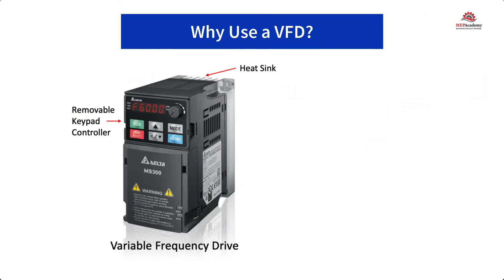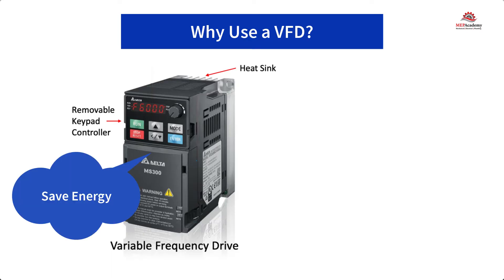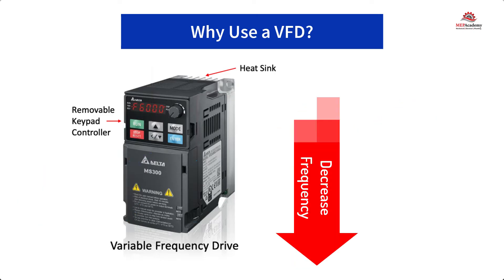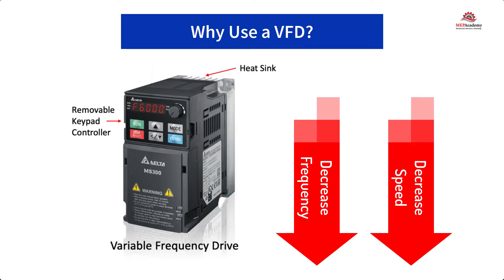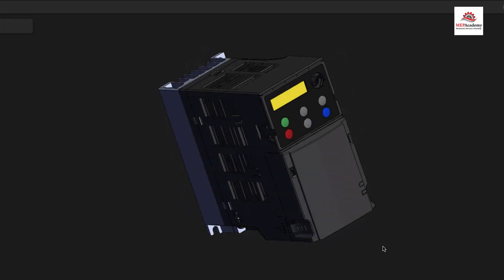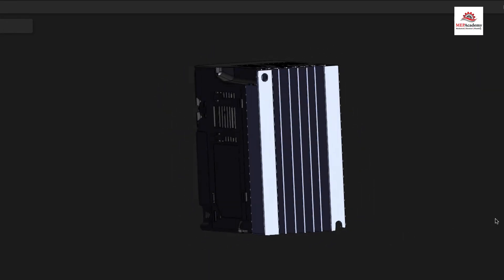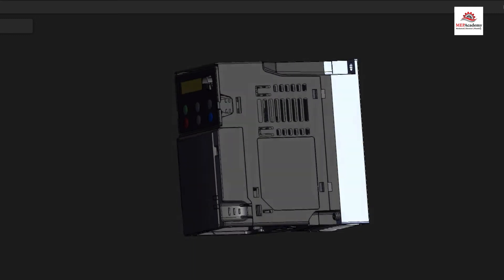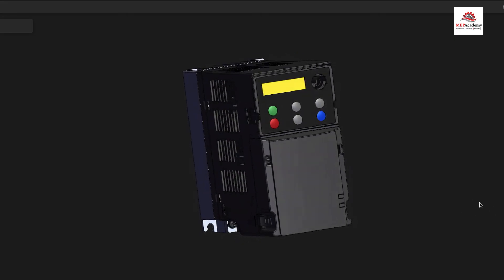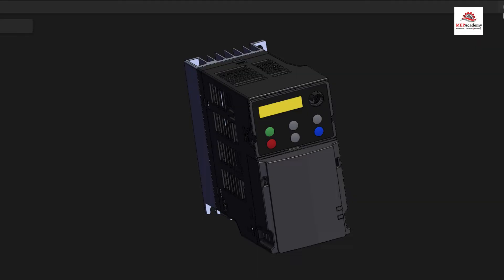So what is the purpose of a variable frequency drive? The main purpose is to vary the speed of a motor by varying its frequency and voltage to provide for energy savings. By increasing the frequency, you can increase the speed of the motor, and by decreasing the frequency, you can decrease the speed of the motor — it's basically that simple. Many of the existing motors that control mechanical equipment were originally designed to run at constant speed, which isn't energy efficient. These older motors were either in the on or off position and used some sort of artificial resistance to control flow.